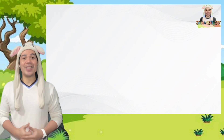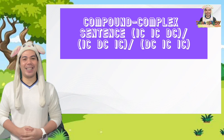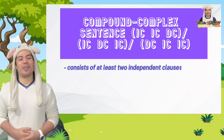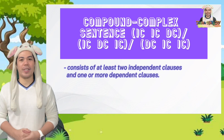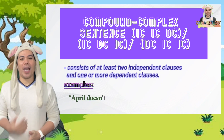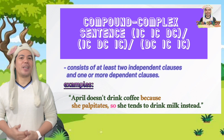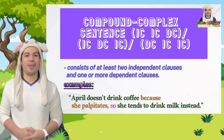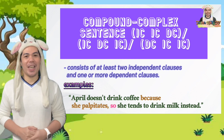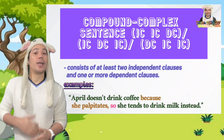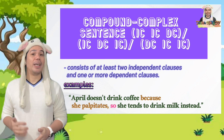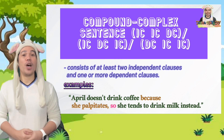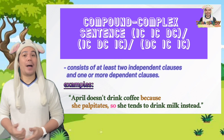The last type is the compound-complex sentence. It consists of at least two independent clauses and one or more dependent clauses. For example: "April doesn't drink coffee because she palpitates, so she tends to drink milk instead." Here we see two independent clauses — "April doesn't drink coffee" and "she tends to drink milk instead" — and one dependent clause: "because she palpitates."